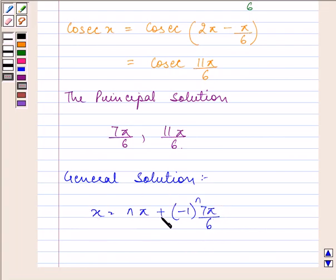x equals nπ plus minus 1 to the power n, and we'll include y in it where y is 7π by 6, and also where n belongs to the set of integers.